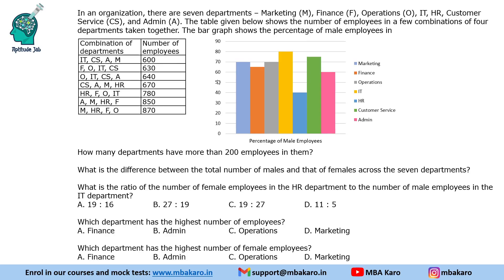Hello everyone, welcome to Aptitude. This problem states that in an organization there are seven departments: marketing, finance, operations, IT, HR, customer service, and admin. The table shows the number of employees in a few combinations of four departments taken together, and the bar graph shows the percentage of male employees in them. We need to find the number of employees in all these departments and the number of female and male employees in them.